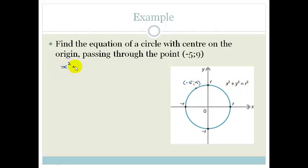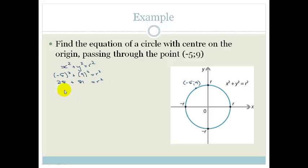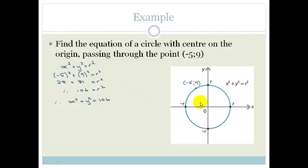We've got x squared plus y squared equals r squared. So therefore we can say minus 5 squared plus 9 squared equals r squared. Minus 5 squared is 25, plus 9 squared is 81, which equals r squared. Therefore 25 plus 81 is 106, equal to r squared. Therefore the equation is x squared plus y squared equals 106. That's how you find the equation with center on the origin.